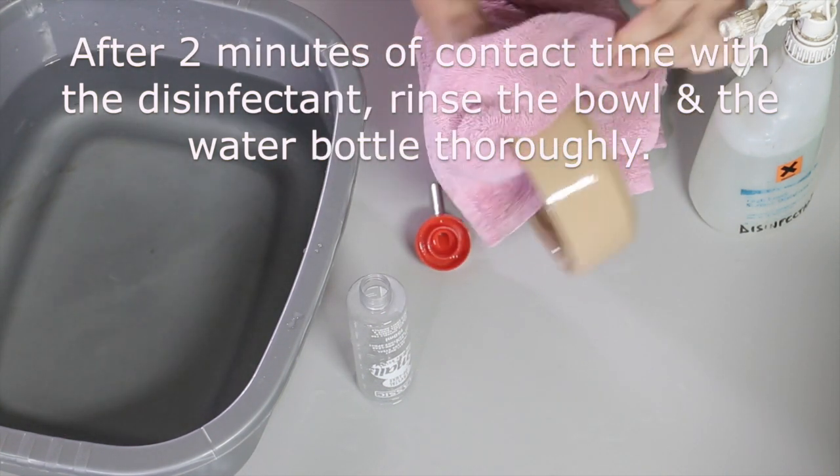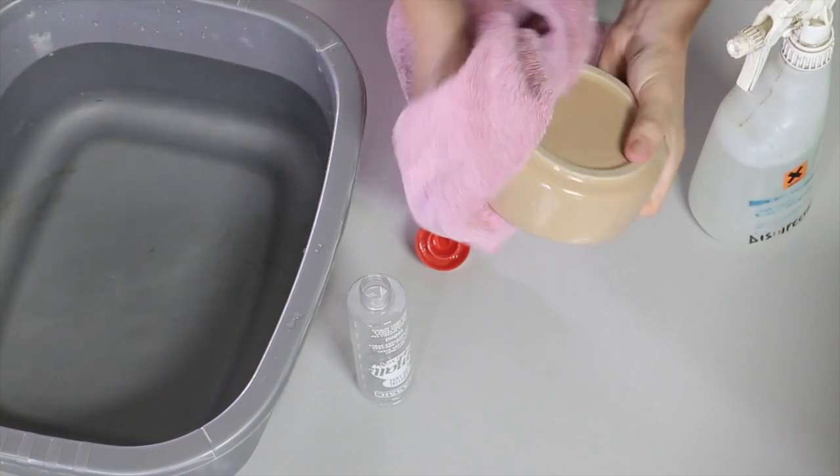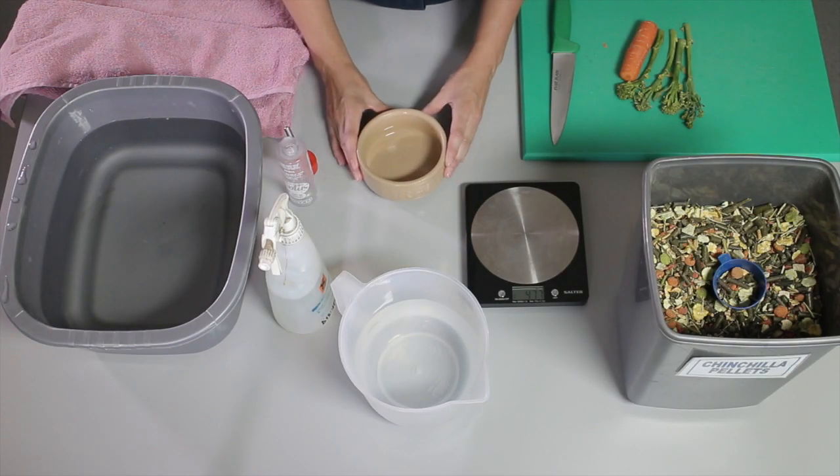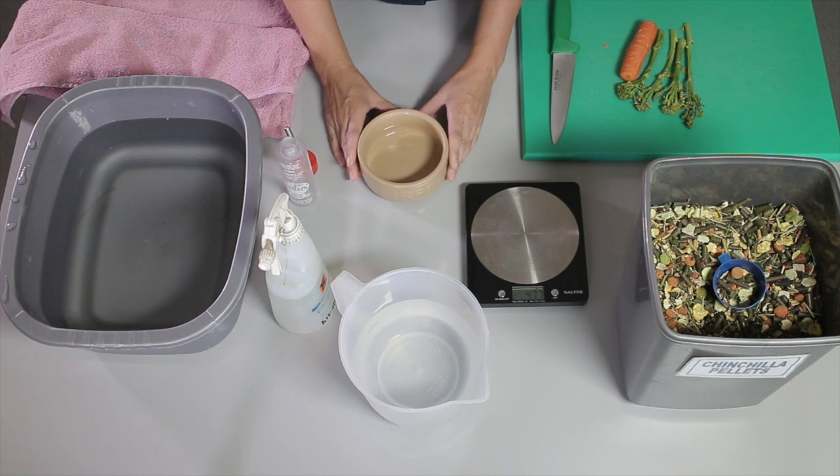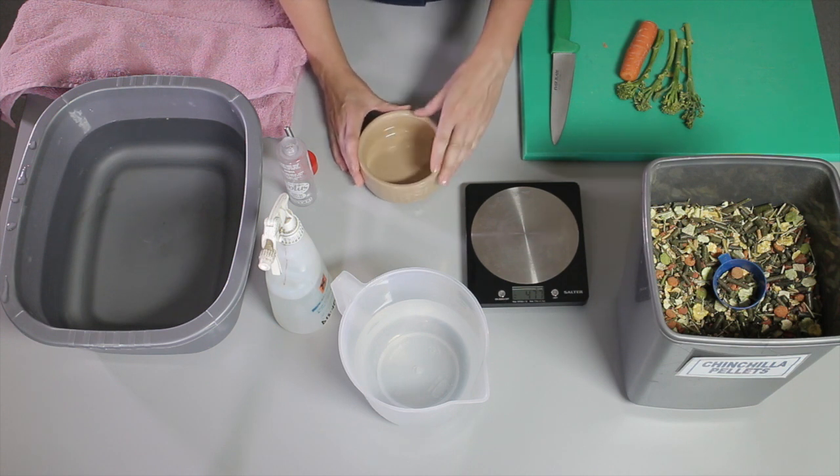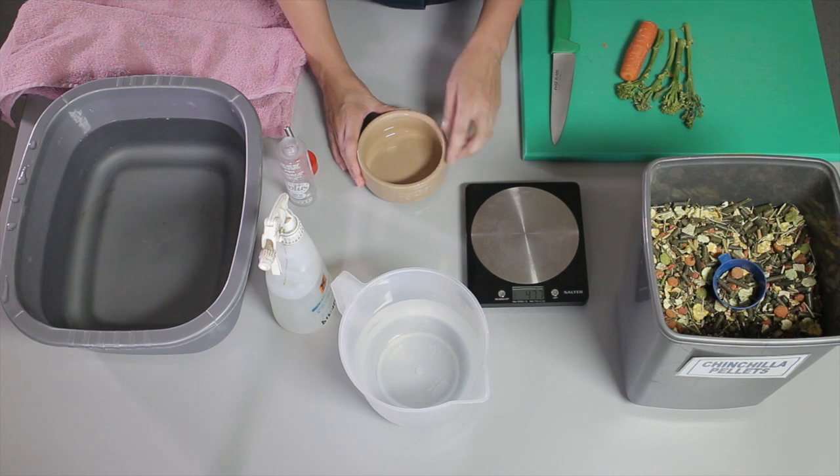Once they're dry, I'm ready to prepare the chinchilla's food. I'm going to use this bowl to feed the chinchilla. I'm picking this type of bowl as it's a heavy ceramic dish that won't tip over. As long as there are no chips in the surface, then it's not going to injure the chinchilla.